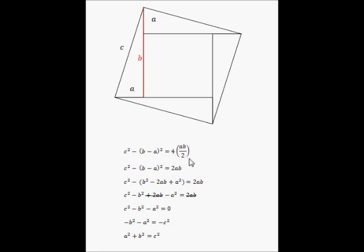So now I've simplified the right hand side down to 2ab. That's just simple numeracy. And then I've expanded out this bracket here. So b minus a squared is equivalent to b squared minus 2ab plus a squared.